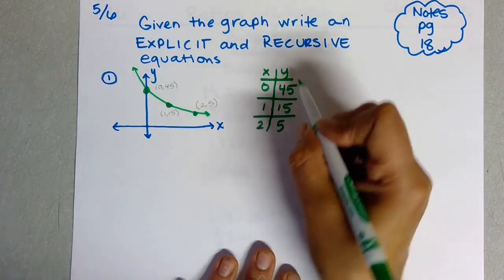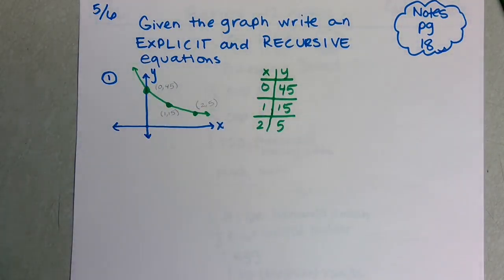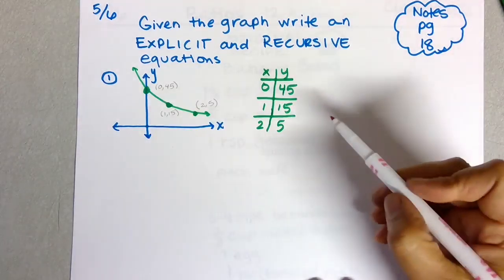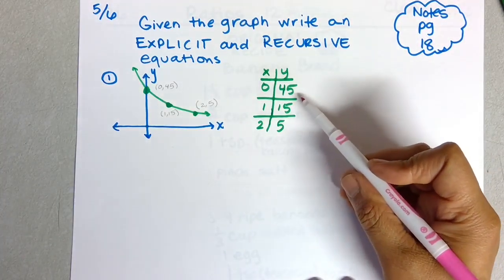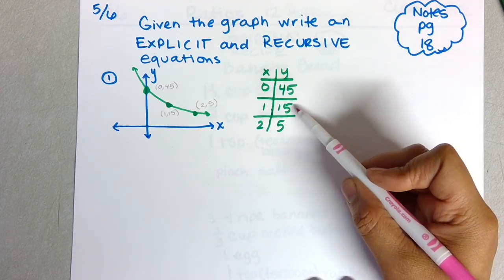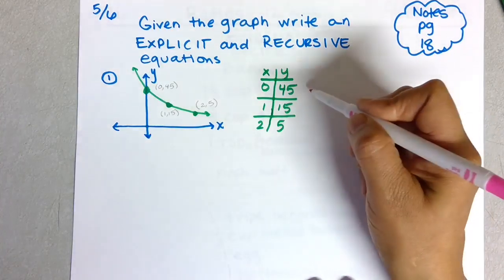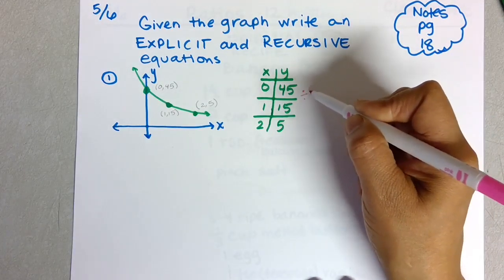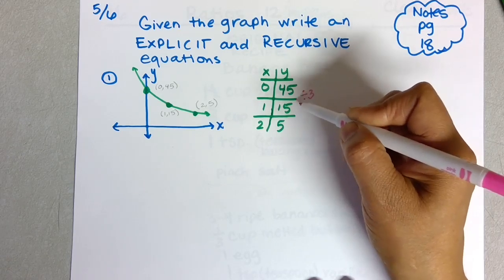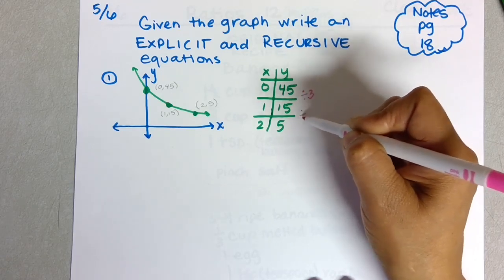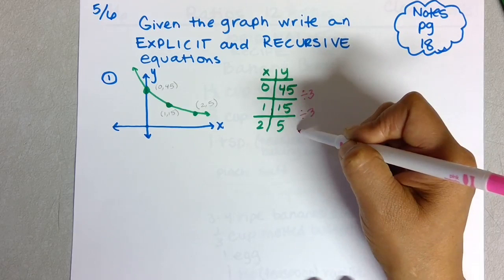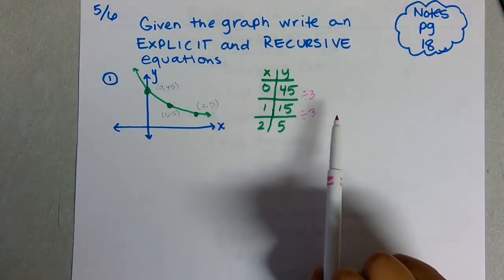The first thing I notice is that the pattern is not growing, it's going down. How is it going down? Well, 45 to 15, 15 to 5—oh, you're dividing by 3. 45 divided by 3 is 15, 15 divided by 3 is 5.